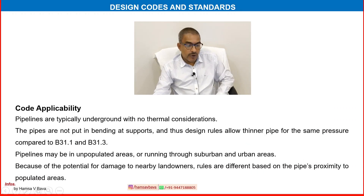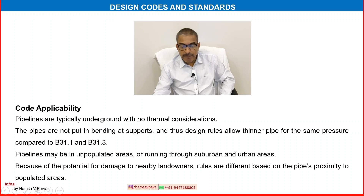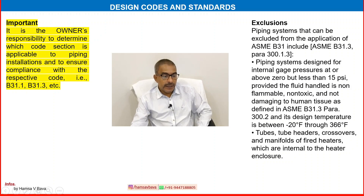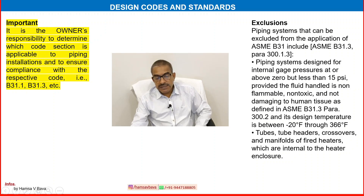Pipelines are typically underground with no thermal considerations. The pipes are not put in bending at supports, and thus design rules allow thinner pipe for the same pressure compared to B31.1 and B31.3. Pipelines may pass through unpopulated, suburban or urban areas, and because of the potential for damage to nearby landowners, rules differ based on the pipe's proximity to populated areas. It is the owner's responsibility to determine which code section is applicable to a piping installation and to ensure compliance with the respective code — whether B31.1, B31.3, or others.